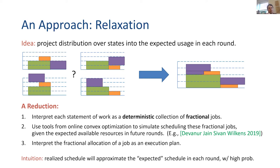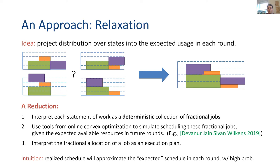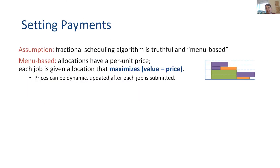We can take those fractional schedules and reinterpret them as execution plans. If I look at where these different pieces of the purple job are executed, I can read that off as an execution plan and say, this is what I'm going to promise to the user. The intuition is that because my supply is large, concentration bounds suggest that as long as I give myself some slack, my realized schedule should approximate this expected schedule most of the time. That 'most of the time' is actually what gives us a lot of trouble and is most of the meat of the paper.